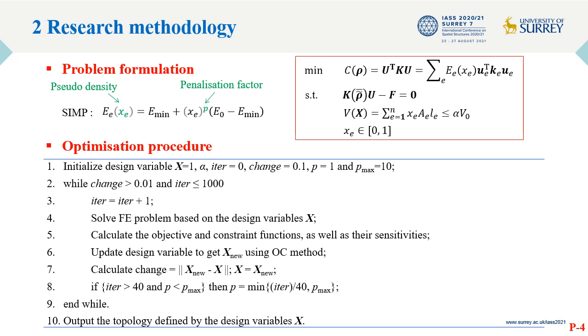The penalization factor is usually set larger than 1 to penalize the stiffness of the elements with intermediate density and drive the results toward binary designs. The objective is to minimize the structural compliance. The constraint is imposed on the global material volume. The problem is solved based on the gradients of the objective and constraint functions, using an optimality criterion method.